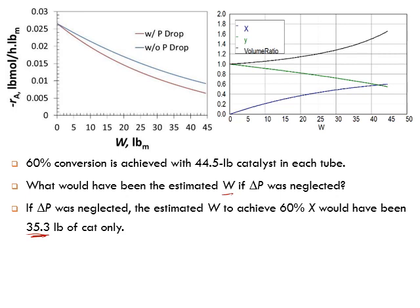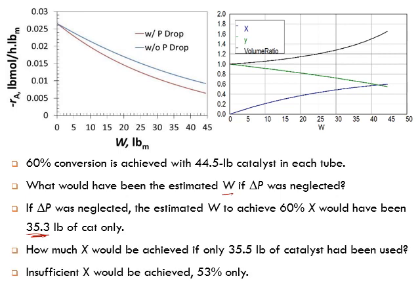If you load only 35 pounds of catalyst, in reality you will get less conversion — only 53% conversion — because in reality you do have pressure drop. With pressure drop, the volumetric flow rate is higher, concentration is lower, and the rate of reaction is lower, so you achieve less conversion.